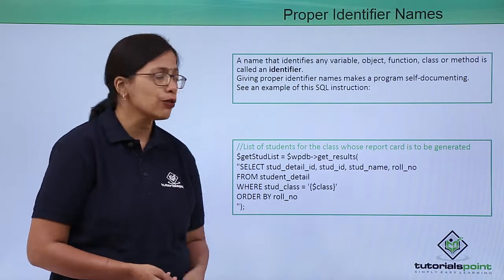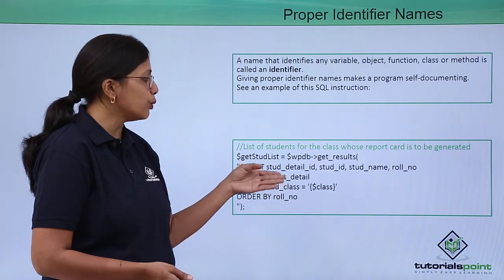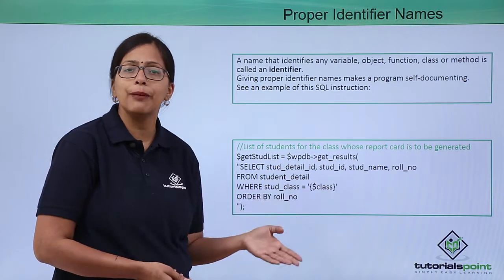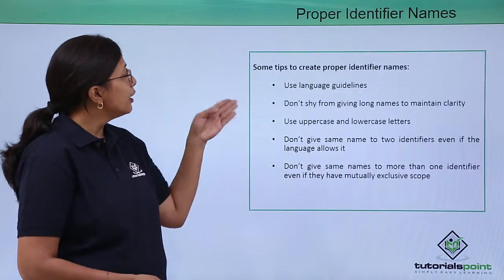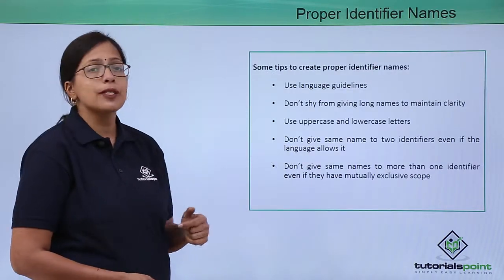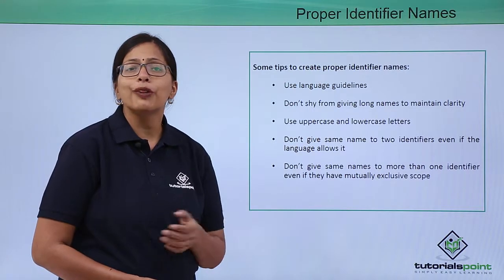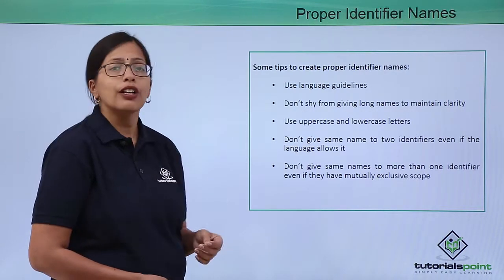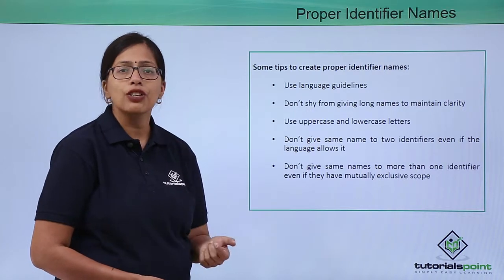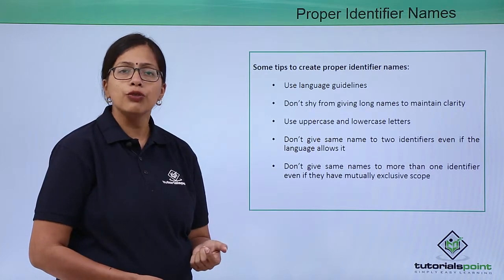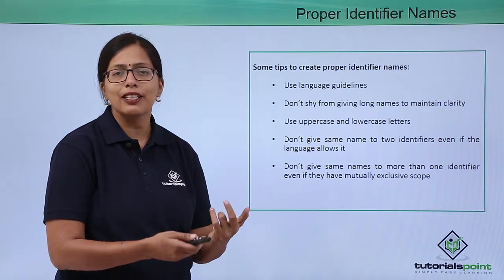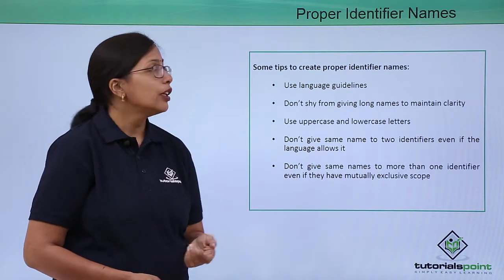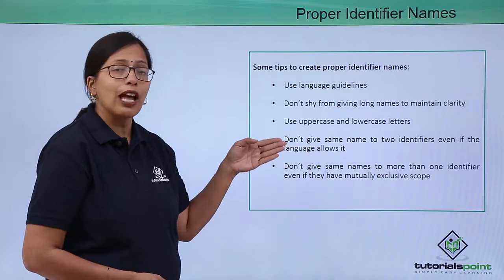No one else needs to tell you that, because the identifier name — the variable name — makes that very clear. Here are some tips you can use to create proper identifier names. You should follow your language's guidelines, whether it's a programming language like Java or C++, or something like SQL.